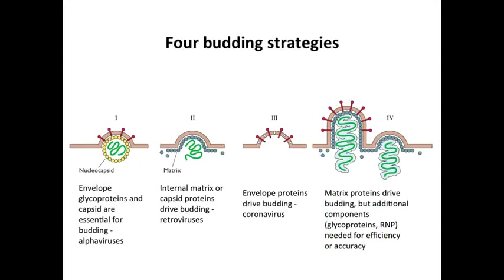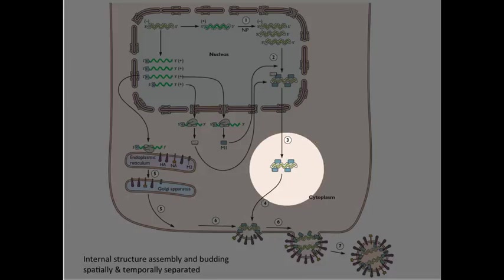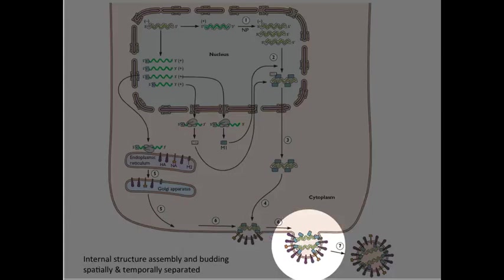And then finally there are some cases where you need a combination of internal and glycoproteins to form a bud. These are all examples of the wide range of complexities in formation of envelope particles. So remember, influenza virus is an example of when you form the internal structure first in the cytoplasm, which then goes to the plasma membrane.